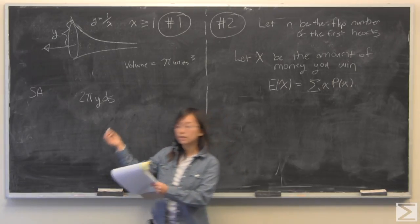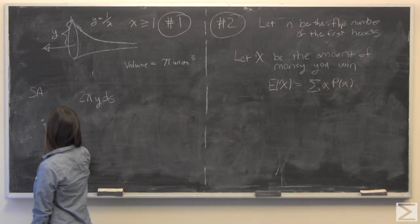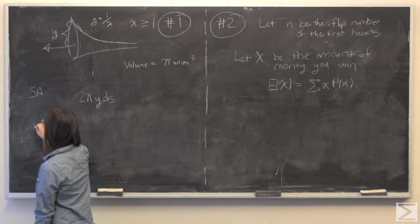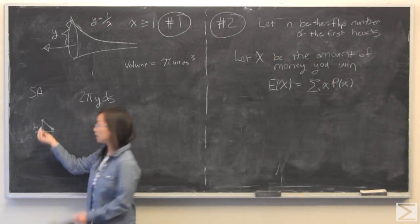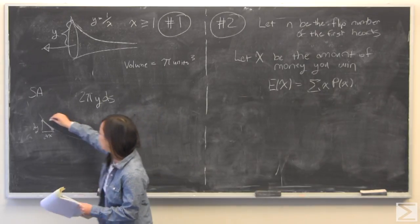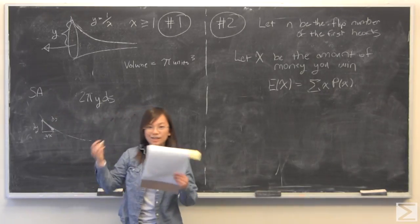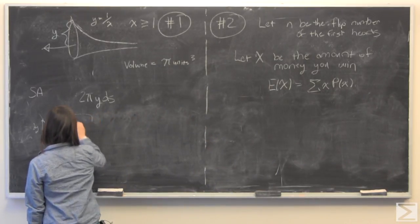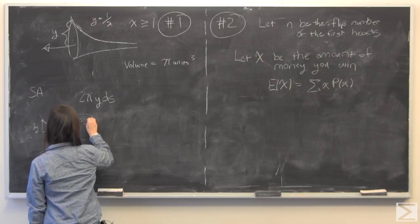But this ds is going to be described by the difference of two points on your function. There is a dy and a dx, and this line over here is going to describe your ds. And Pythagorean theorem does tell us that this is going to be equal to square root dx squared plus dy squared.